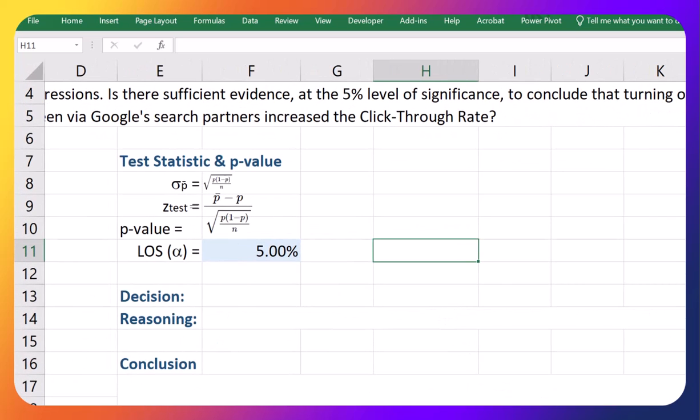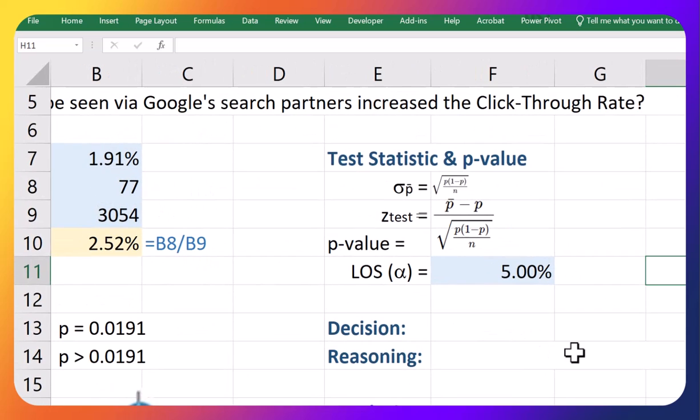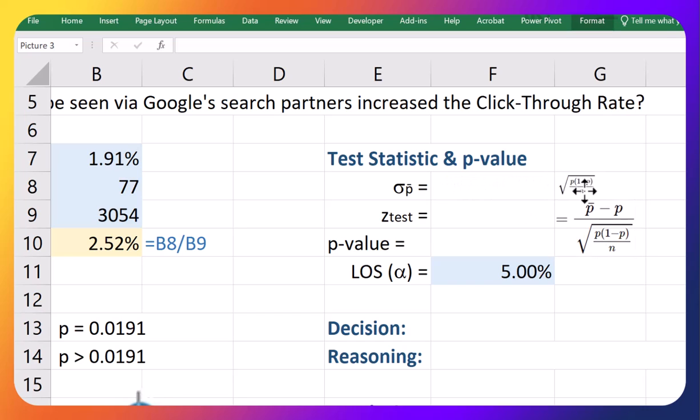So my z-score formula, let's just zoom in so you can see it, is this p-bar minus p all over this standard deviation which is this guy here. So I'm going to go get this bottom piece first and then I'll put it in to calculate my z-test. Okay so let's just go do this.